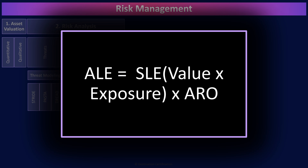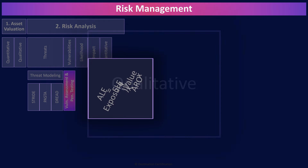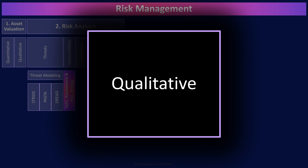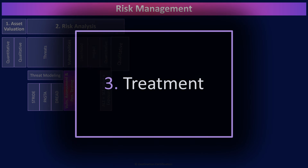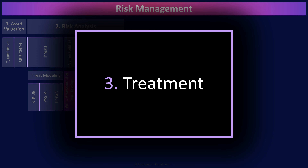That is why we are forced to use qualitative analysis most of the time — a relative ranking system. Not great, but a whole lot better than nothing. Which brings us to the third major step in risk management: treatment. Treatment is where we figure out how to do something about the risks we've identified. There are four major treatment methods: avoid, transfer, mitigate, and accept.